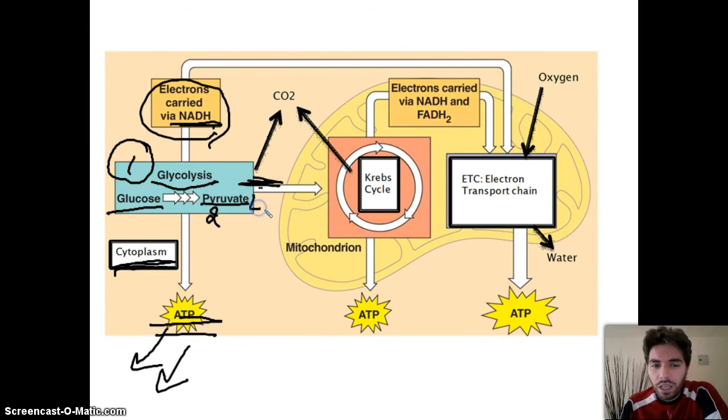There's a process called link reaction. I won't talk about it a lot, but the CO2 given off is given off in the link reaction, and this link reaction gives more NADH. The link reaction will transform pyruvate into another substance which will be able to go into the second step, or the third step if you want to call it, which is the Krebs cycle.